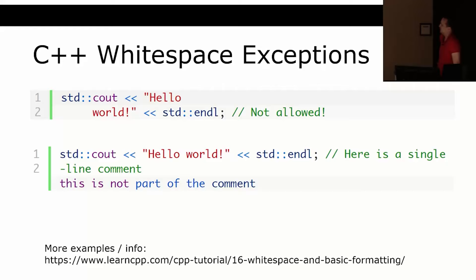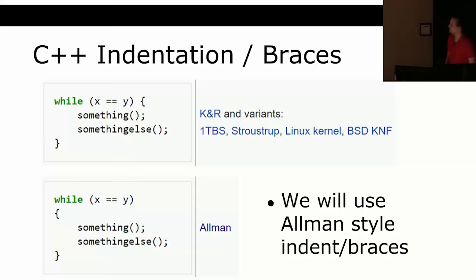Allman style is verbose — it takes more lines of code. When I have a class with many short functions, I'll sometimes write the whole function on one line. The only real whitespace exceptions are: you cannot insert a newline in the middle of a string literal, and for single-line comments denoted by `//`, you can't put a newline inside them because the next line won't be treated as a comment. We'll be using Allman style for this course.